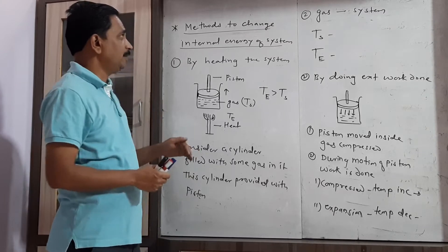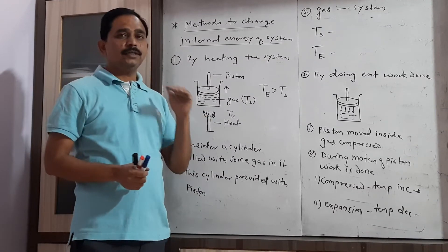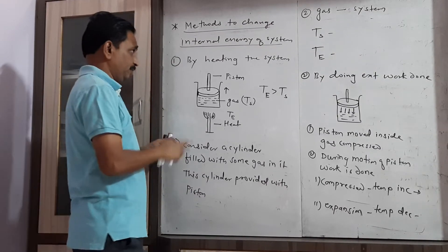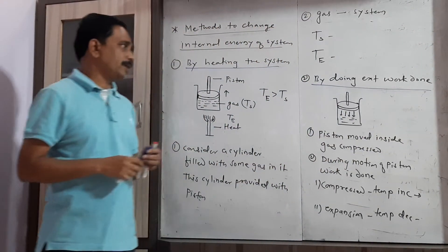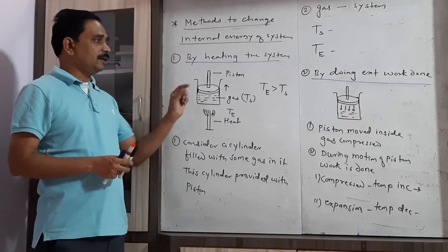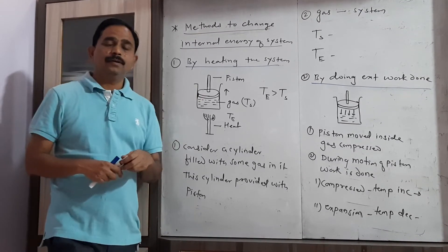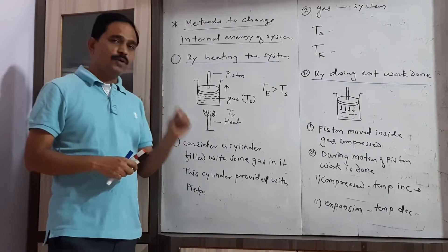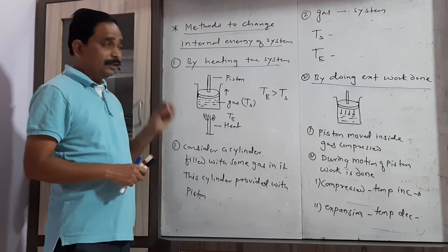Now we have to consider the two methods by which we can change the internal energy of the system. The first method is by heating the system, and the second is by doing external work. Let us consider the first method: by heating the system, we heat that system externally.